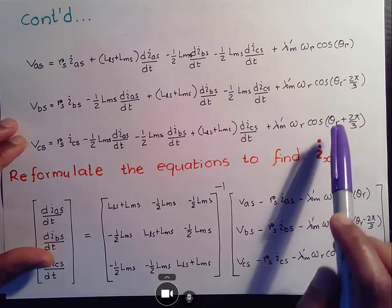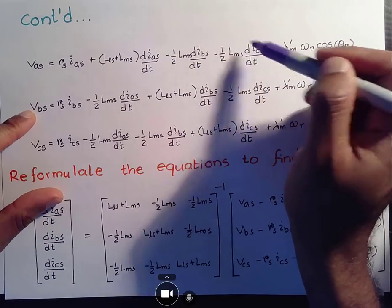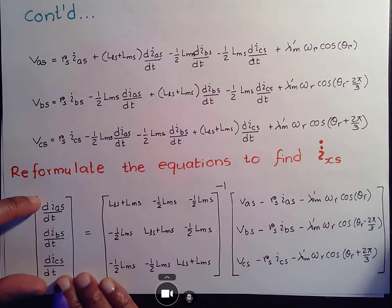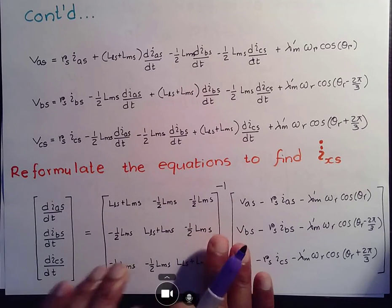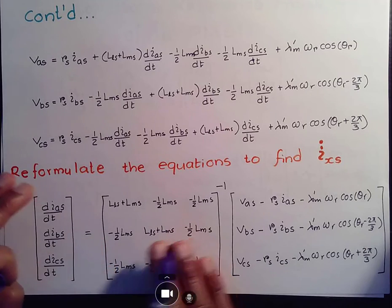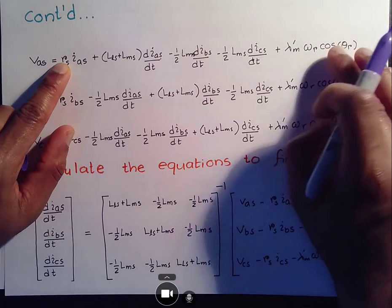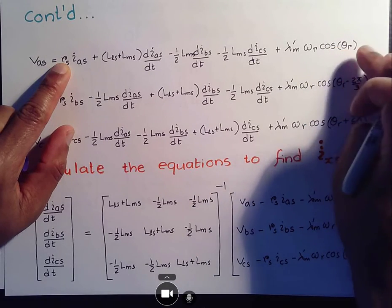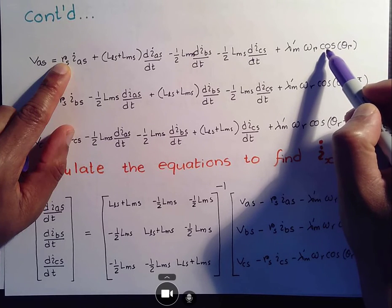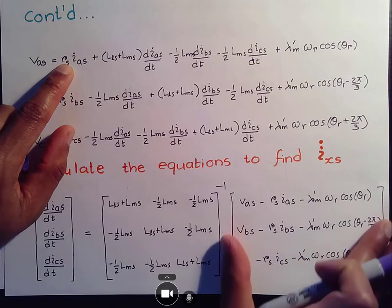And in order for us to find these IAS, IBS or rate of change of these ABC currents, we're going to pull all of them onto the left-hand side and then we'll have the inductance matrix left of it. And we'll have our voltage term. So VAS minus RS IAS minus lambda M omega R cosine theta. Sine theta became cosine theta because of the derivative term.